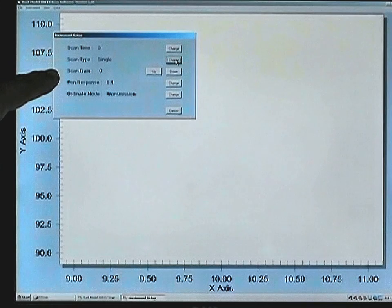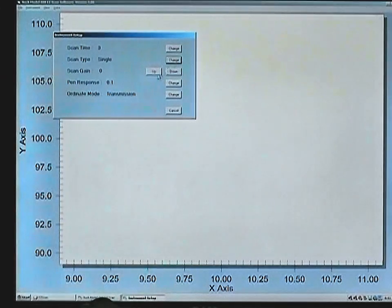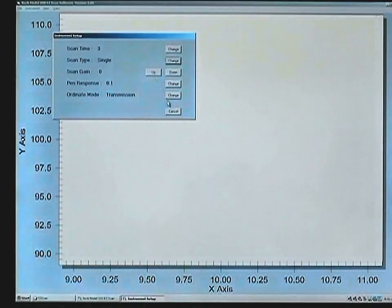A gain of 0 is useful most of the time unless you have an accessory with a tremendous amount of light lost, then you can increase to a gain of 1 by clicking on the up icon. Cancel to exit this screen.